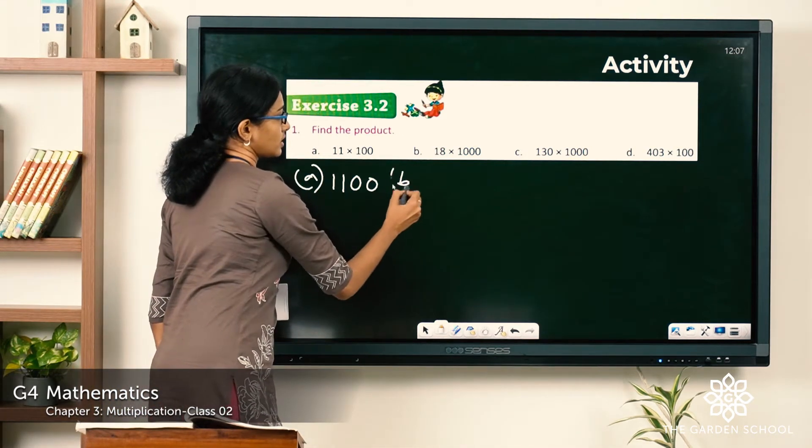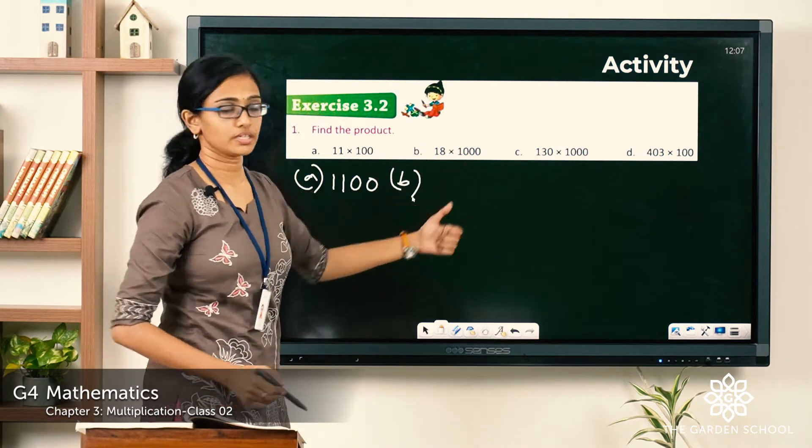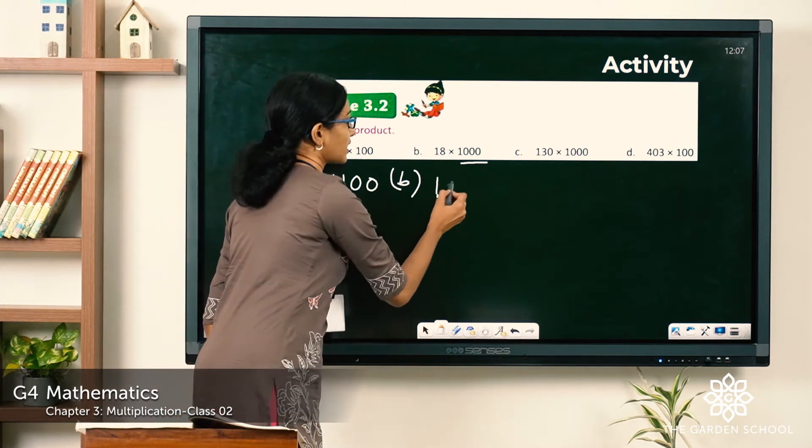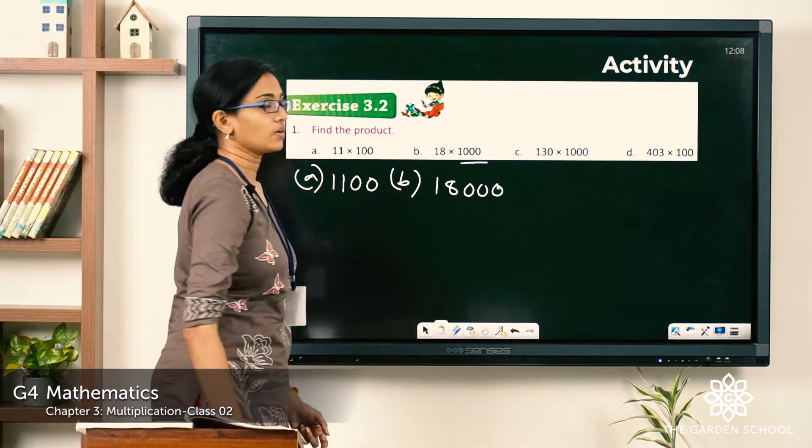Now B. It is 18 into 1000. How many zeros to the right of it? Three zeros. So the product is 18,000.